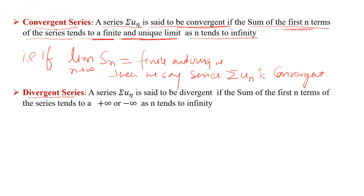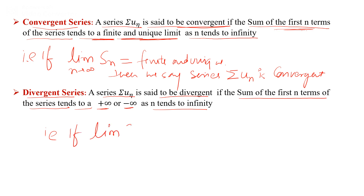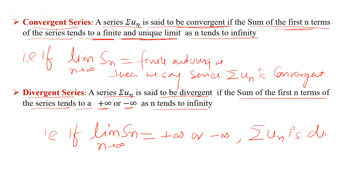Similarly, a series Σun is said to be divergent if the sum of the first n terms tends to plus infinity or minus infinity as n tends to infinity — that is, if the limit of Sn as n tends to infinity equals plus infinity or minus infinity, then the given series Σun is divergent.